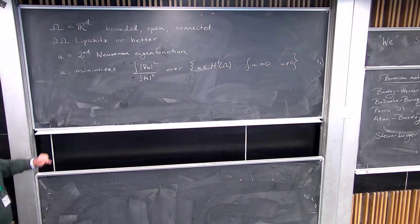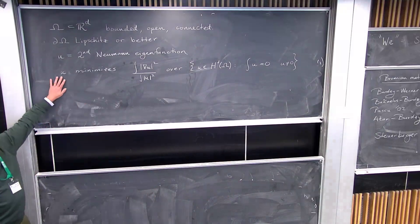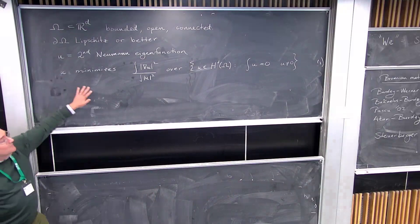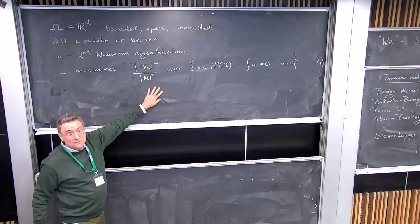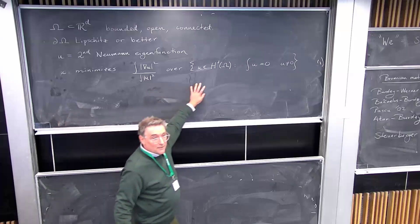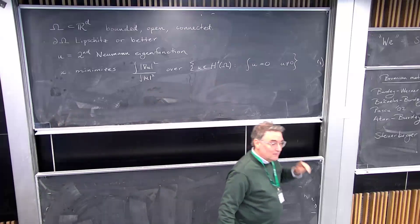I'll use u to represent second Neumann eigenfunctions. I think of these as minimizers of the Rayleigh quotient over H^1.